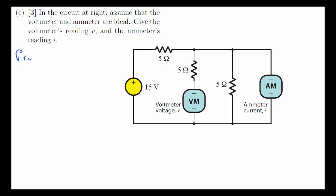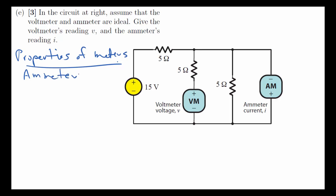An ammeter measures current and we put it in series in the circuit. We normally break a branch and measure the current that way. So that it doesn't interfere with the measurement, it has to have zero resistance so that it looks like a wire — it has to look like a short circuit. That is its key property.